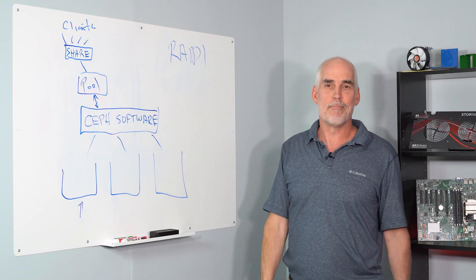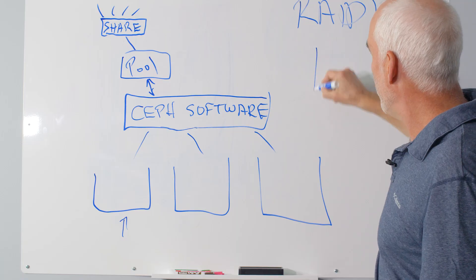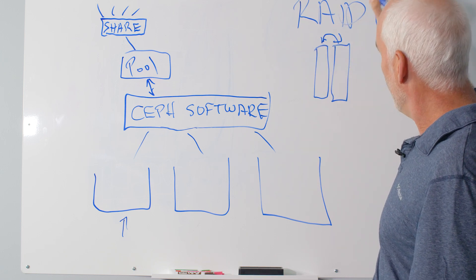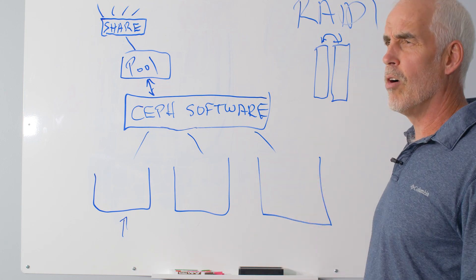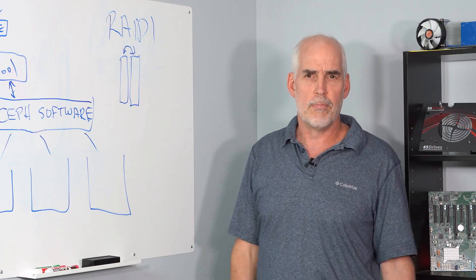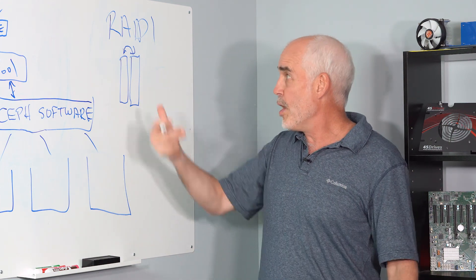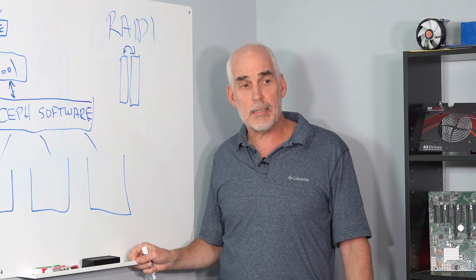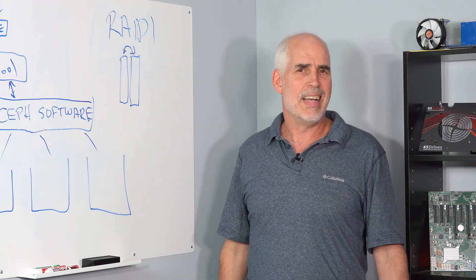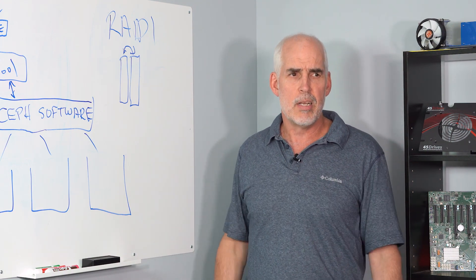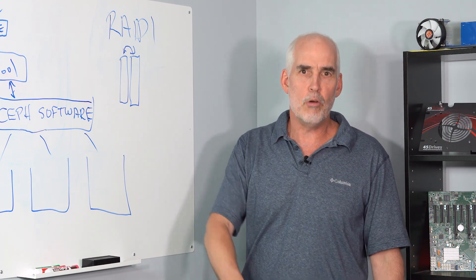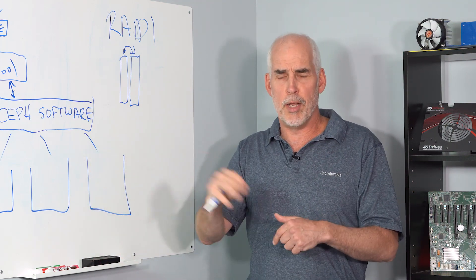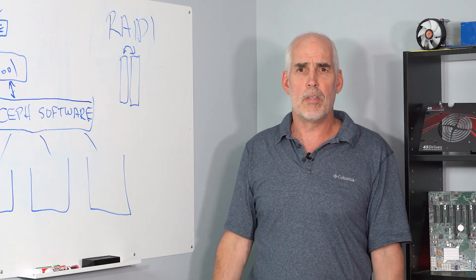Anyone in IT understands RAID 1. RAID 1 is mirroring. You plug in two hard drives, set them up in RAID 1, and content written to one drive is transparently copied to the other. If one drive dies, you keep on chugging — the system notifies you, you hot-swap out the bad drive, it rebuilds the mirror, and everything is transparent.